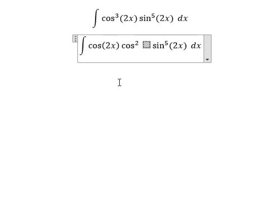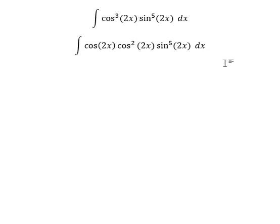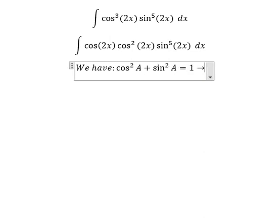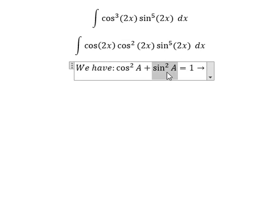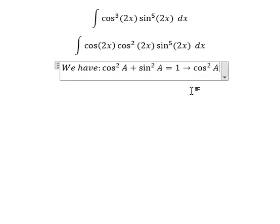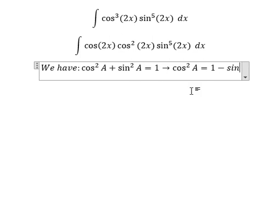Next we have the formula here. We have cosine squared A plus sine squared A equals 1, which means cosine squared A equals 1 minus sine squared A. Because we have cosine 2x, I will substitute this and we have 1 minus sine squared 2x.